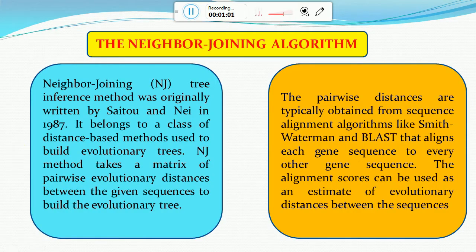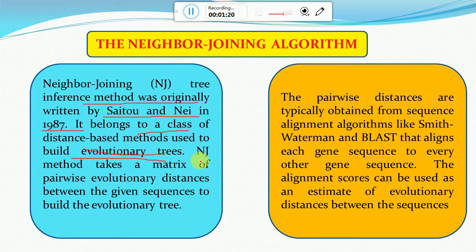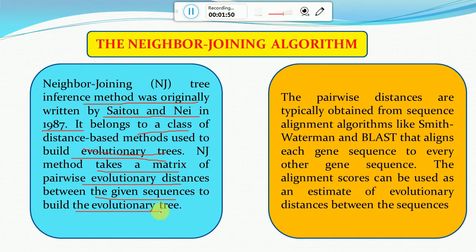We'll start by giving a brief introduction about the scientist who gave this method and in which year it was developed. The neighbor joining method, or NJ tree, is an inference method which was originally written by Saito and Nei in 1987. It belongs to a class of distance-based methods used to build evolutionary trees. The NJ method takes a matrix of pairwise evolutionary distances between given sequences to build an evolutionary tree. Before creating a phylogenetic tree using the NJ method, we require a distance-based matrix — a matrix which gives distances between two different species or various species among each other.